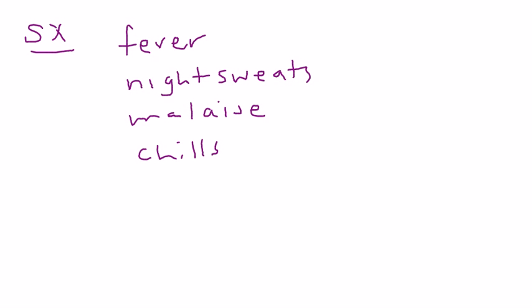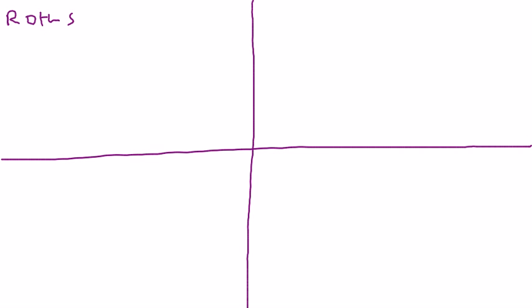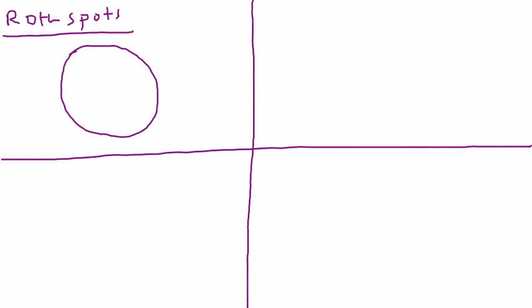But there are some that are very specific and they talk about on licensing exams a lot, so I'm going to concentrate on those. There are four of them — more like physical exam findings rather than symptoms. The first one is called Roth spot. A Roth spot is basically a retinal hemorrhage that you would see on a fundoscopic exam.